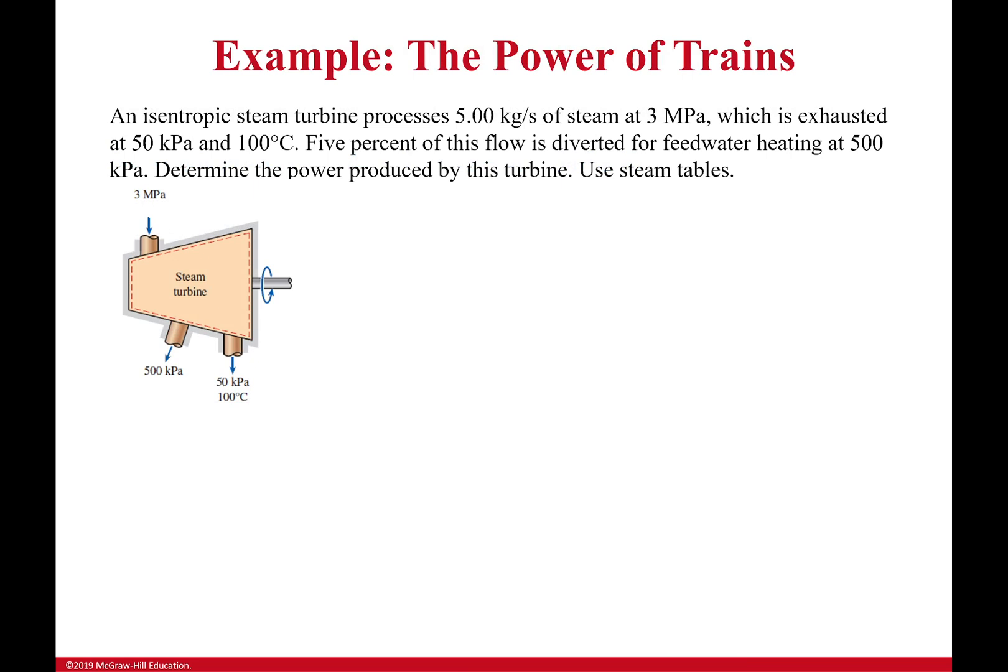So example, the power of trains. An isentropic steam turbine processes 5 kilograms of steam, that's a mass flow rate, at 3 megapascals, which is exhausted at 50 kilopascals and 100 degrees Celsius. It also says that 5% is diverted to feedwater heating at 500 kilopascals. That's 5%, 95% goes here. And we want to find the power produced by this turbine. Use the steam tables.